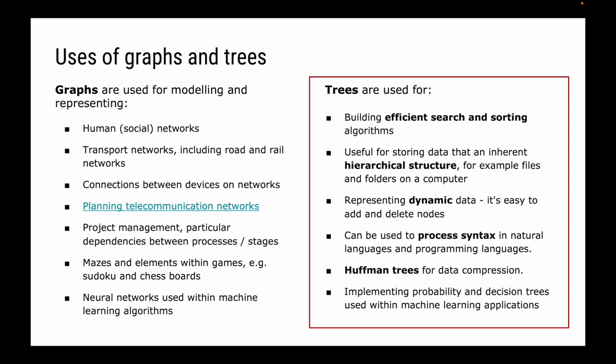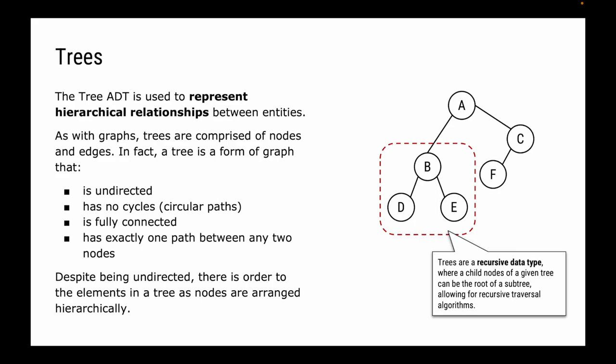Trees can be used in lots of areas of computer science. The tree abstract data structure is used to represent hierarchical relationships between entities. Just as with graphs, trees are comprised of nodes that have edges. A tree is actually a form of graph that has no directions — it's undirected — has no cycles or circular paths, is fully connected, and there must be exactly one path between any two nodes.